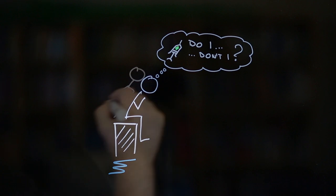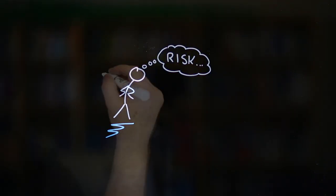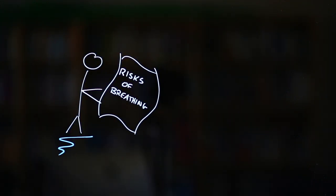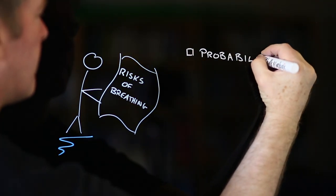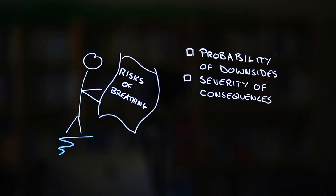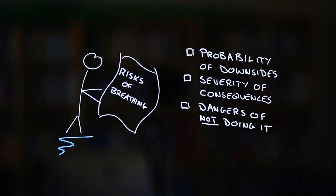Number one: What if the vaccine comes with unknown risks? Unfortunately, everything we do comes with risks and vaccines are no different. But the important questions here include how likely are possible downsides? How severe are the potential consequences? And perhaps the biggest one of them all, what are the hidden dangers of not acting?